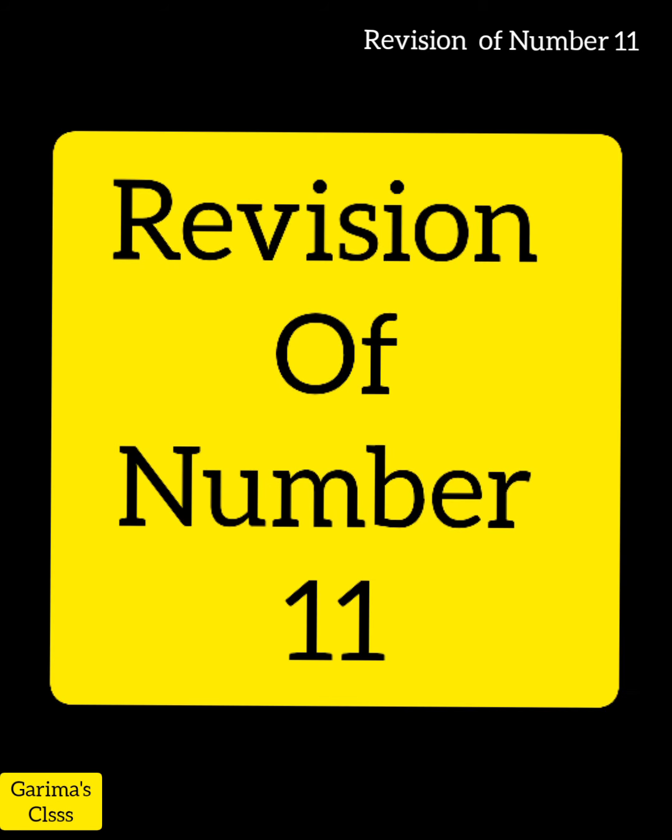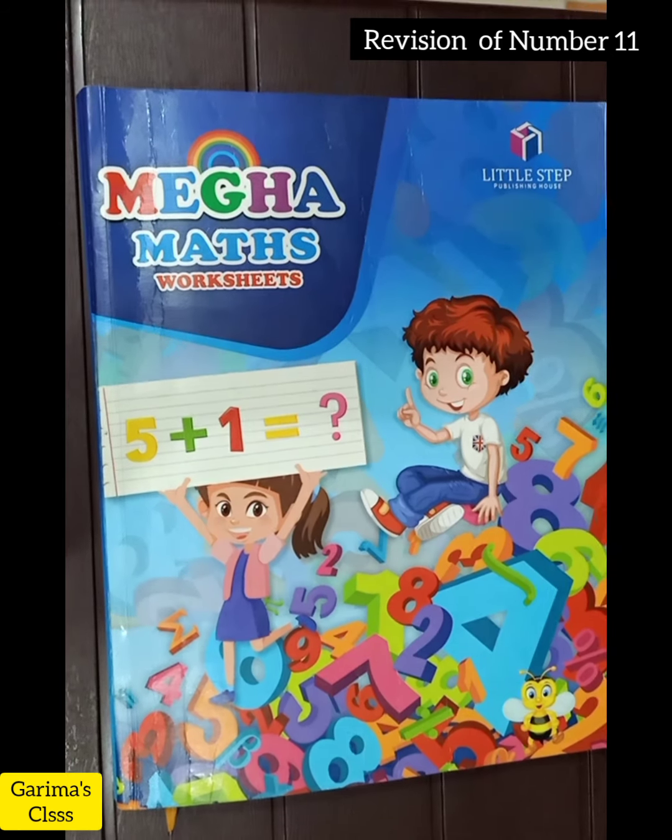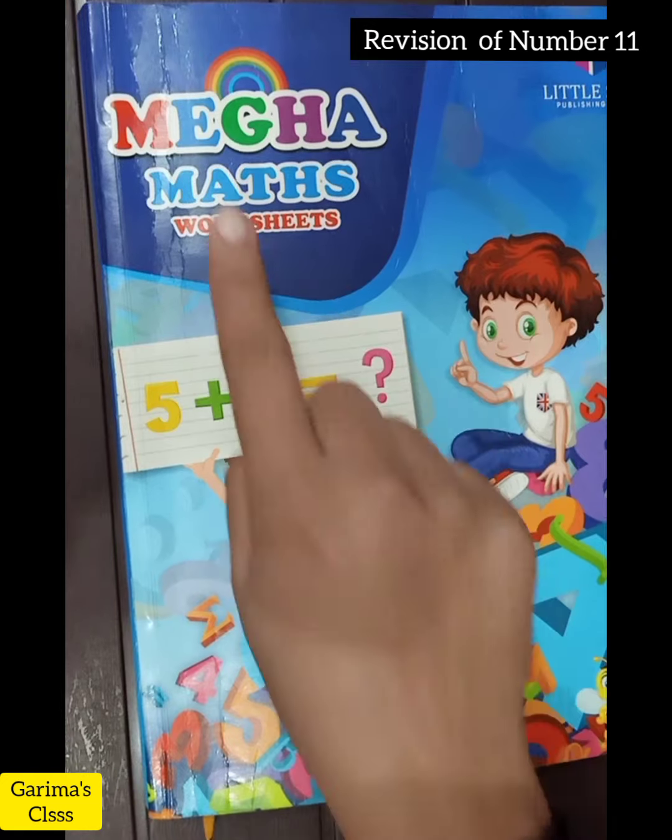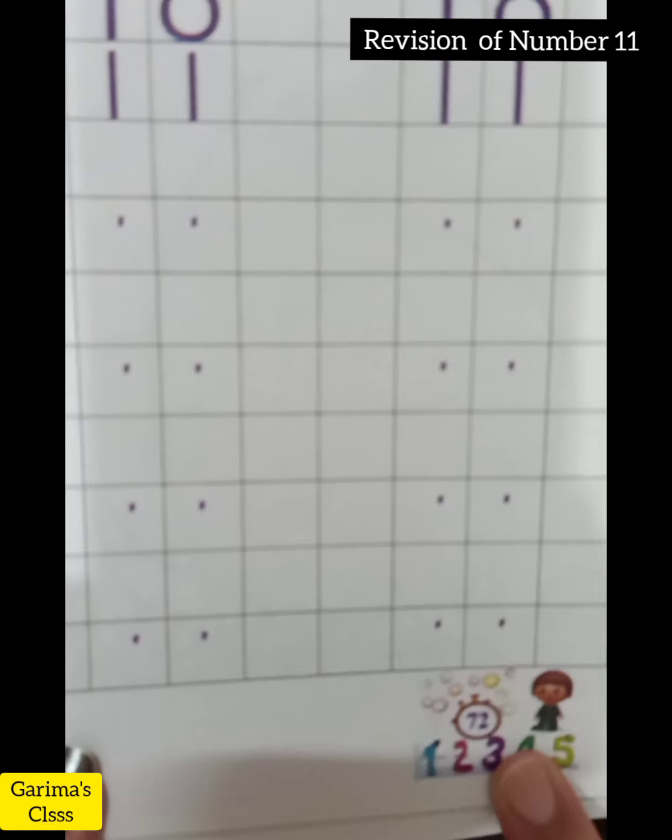Kids, can you see this number? This is number 11. One, one, 11. Today, we are doing our work in Mega Matchbook. Take out page number 72.